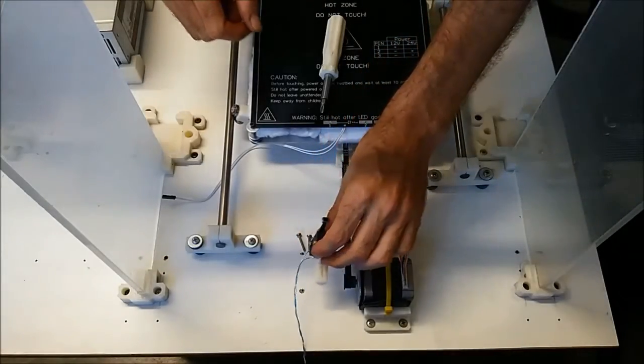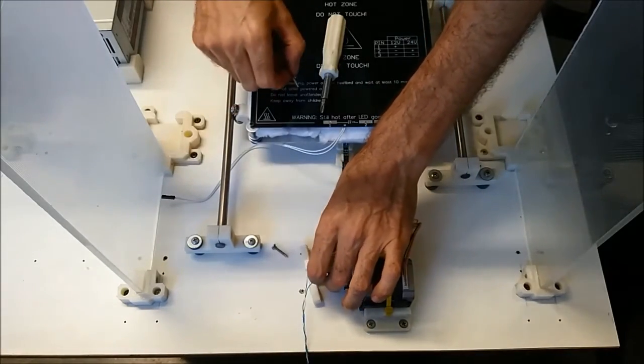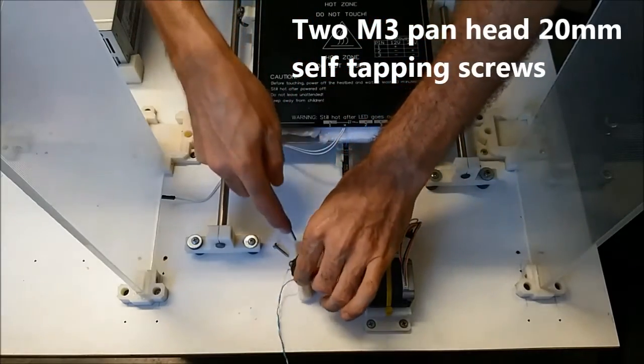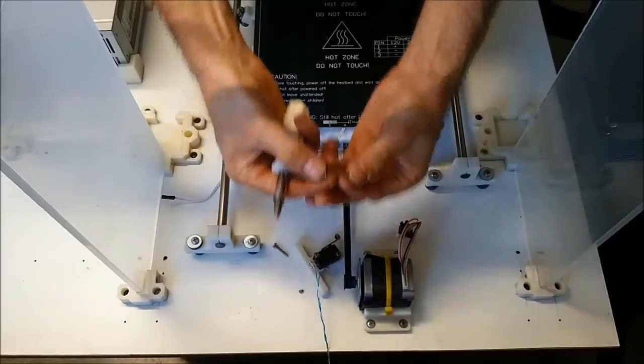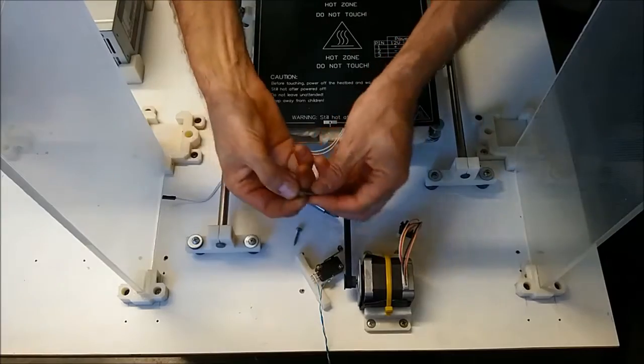So now we're ready to mount the micro-switch, the Y-axis end stop. So grab our two screws, M3 by probably 20, 25. And I might actually grab a washer for those. So just grab some M3 washers.